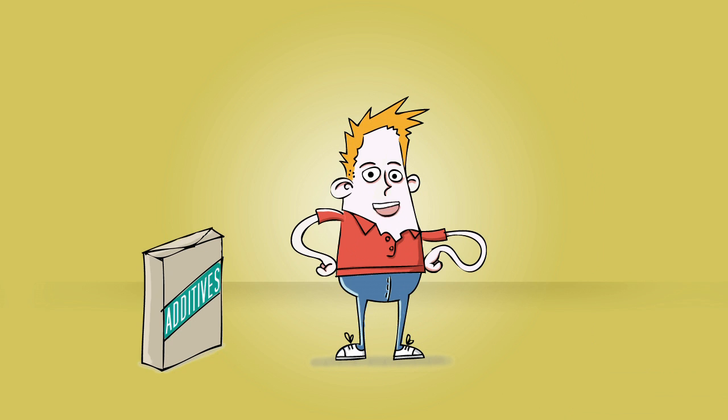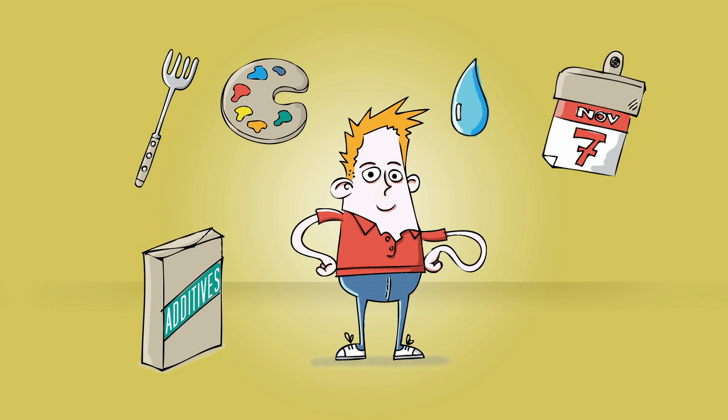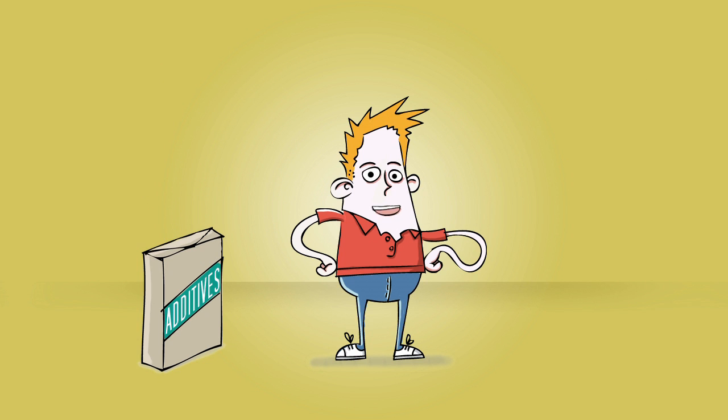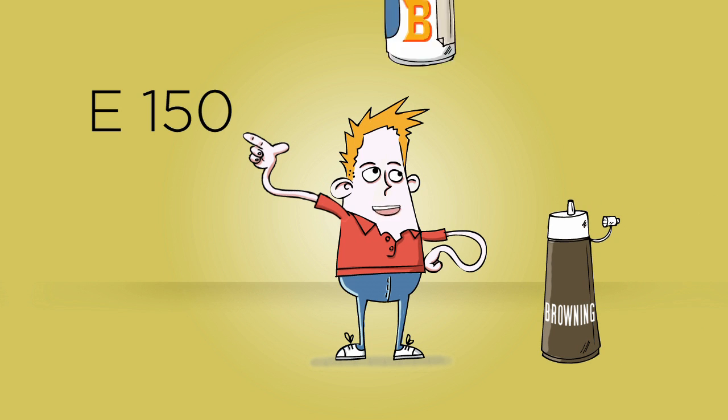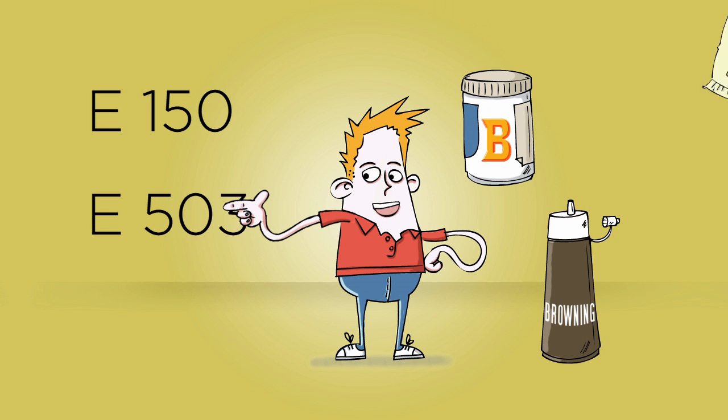You find additives in almost all processed foods. They are used to give food flavour, colour, texture and a long shelf life. And many additives are actually quite common, well-known household ingredients, such as gravy browning, baking powder and citric acid.